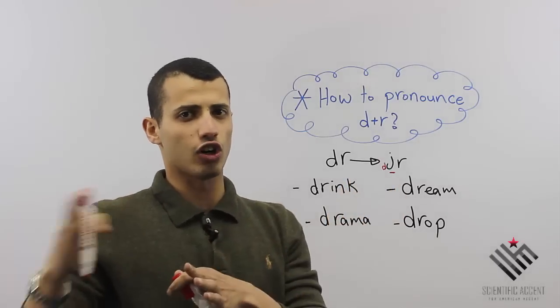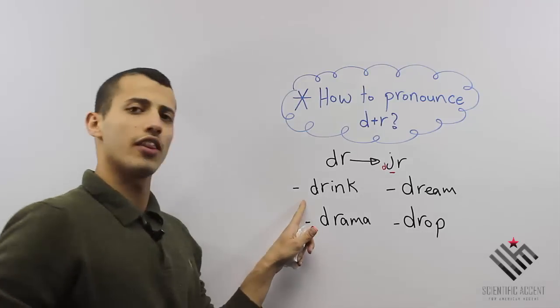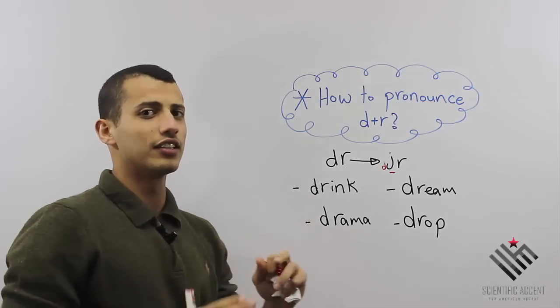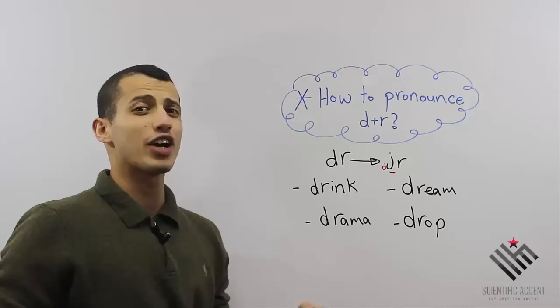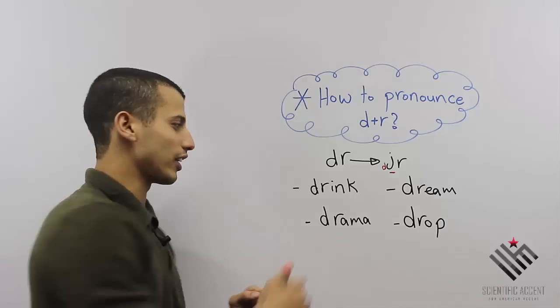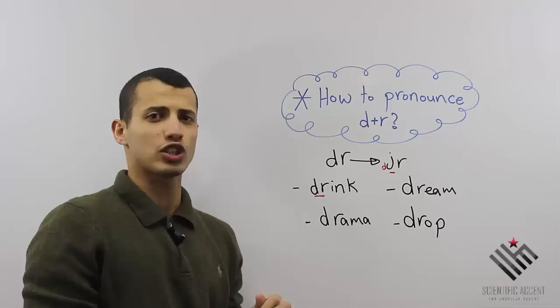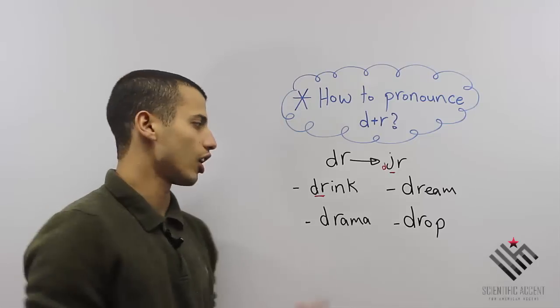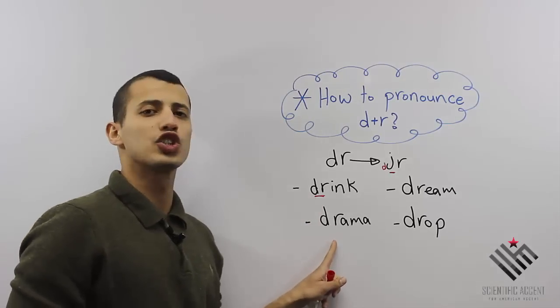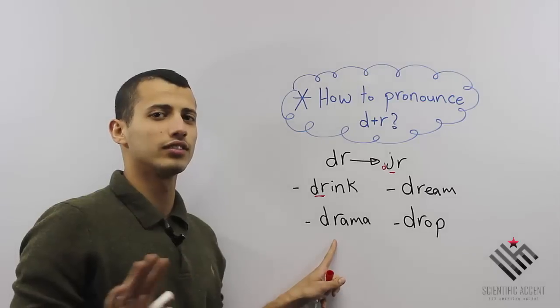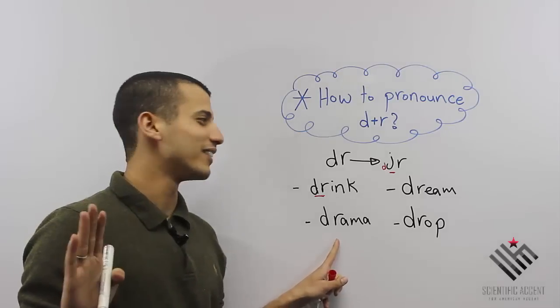For example, this word: is it 'drink' or 'drink'? Of course 'drink', because of the DR. So whenever you see D plus R, it's 'juror'. 'Drink', 'drama' - not 'drama', but 'drama'.